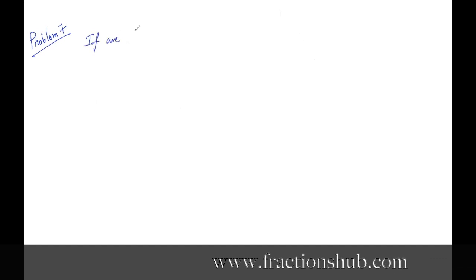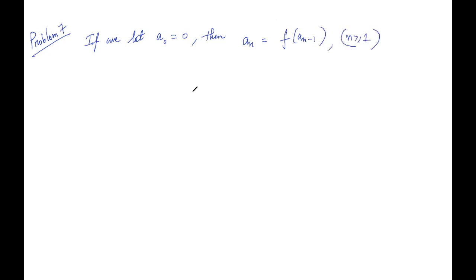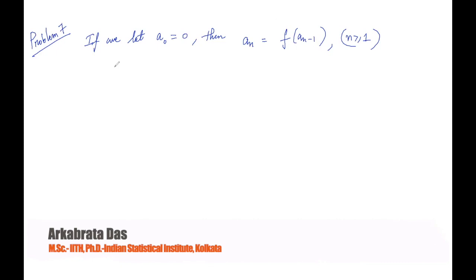If we let a0 = 0, then we can define aₙ as f(aₙ₋₁) where n ≥ 1. Now notice one thing: f is a polynomial with integer coefficients, so we know that (x − y) divides f(x) − f(y). We are going to need this.